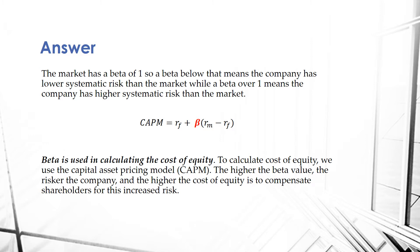Beta is used in calculating the cost of equity. To calculate the cost of equity, we use the capital asset pricing model, the CAPM model. The higher the beta value, the riskier the company, and the higher the cost of equity is to compensate shareholders for this increased risk. The CAPM formula is: the risk-free rate (RF) plus beta times the market risk premium — the difference between the expected market return and the risk-free rate. The risk-free rate is the lower threshold, the rate of return all investors can expect from a risk-free asset. As the risk for that respective company increases, the cost of equity increases to compensate for that, which makes sense.